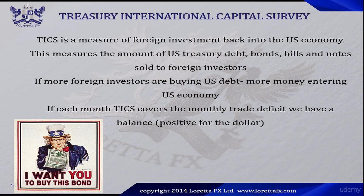If each month TIC covers the monthly trade deficit, we have a balance. Remember, the U.S. operates at a trade deficit of approximately negative 44 billion dollars. If each month TIC — which measures the amount of U.S. debt sold to foreign investors — covers the monthly trade deficit, then we have a balance, and this is positive for the U.S. dollar. If TIC exceeds the monthly trade deficit, this is even more positive for the U.S. dollar. Also, if TIC fails to cover the monthly trade deficit, this is bearish for the U.S. dollar.